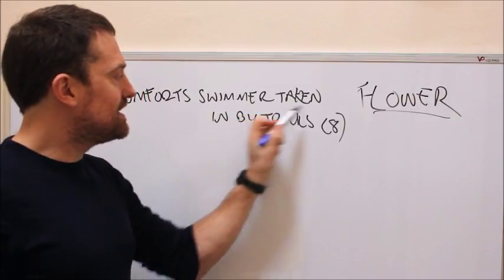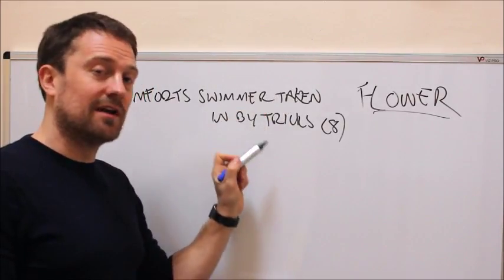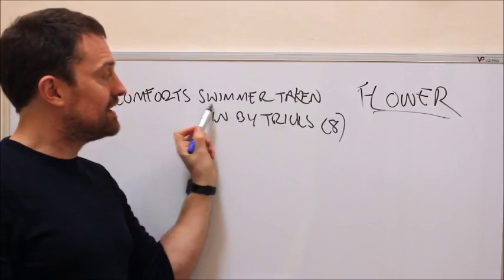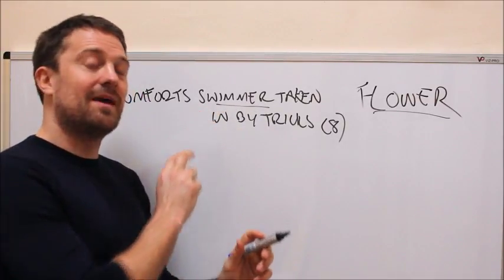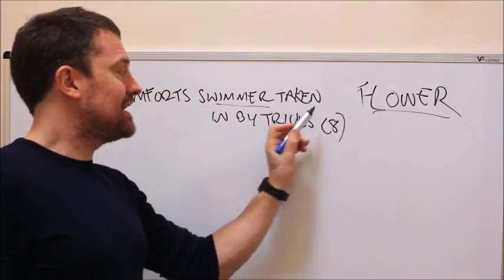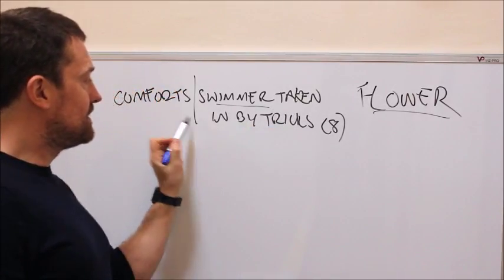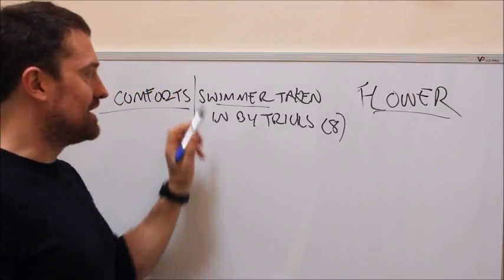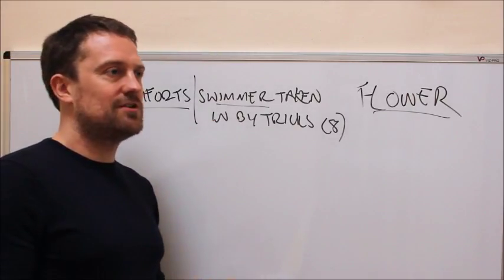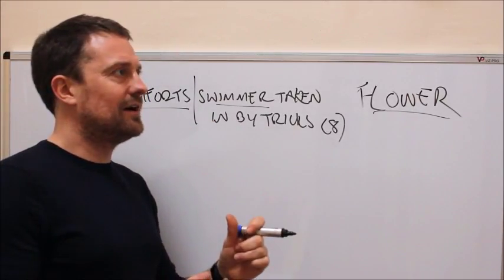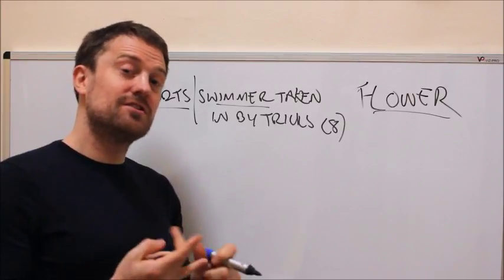If you look at this clue—and we won't worry too much about the function of it—'taken in by' looks an awful lot like a piece of functionality. So you're thinking 'swimmer', and you now know that swimmer could possibly be a type of fish. It's taken in by a word for tricks, and it means comforts. So quite commonly for fish, you'll have dab, chub, there's a dace, but this is sole.